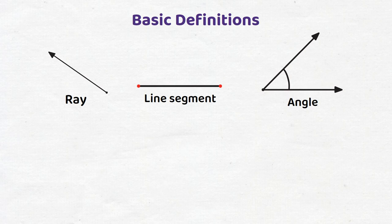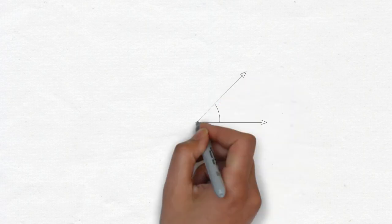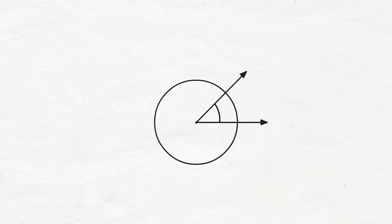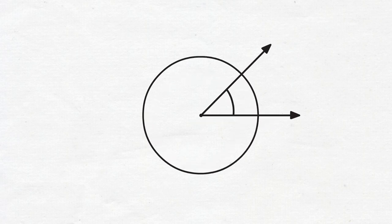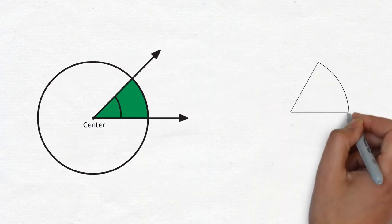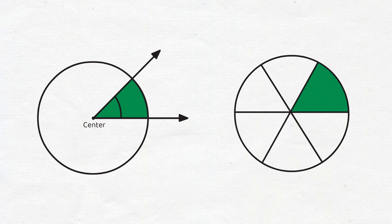A common way to measure angles is by using degrees. Anytime we have an angle, we can imagine the angle as part of a circle. In this picture, we can see that when we form a circle centered at the point where the rays intersect, we get what looks like a pizza slice. This pizza slice is a part of the whole circle.